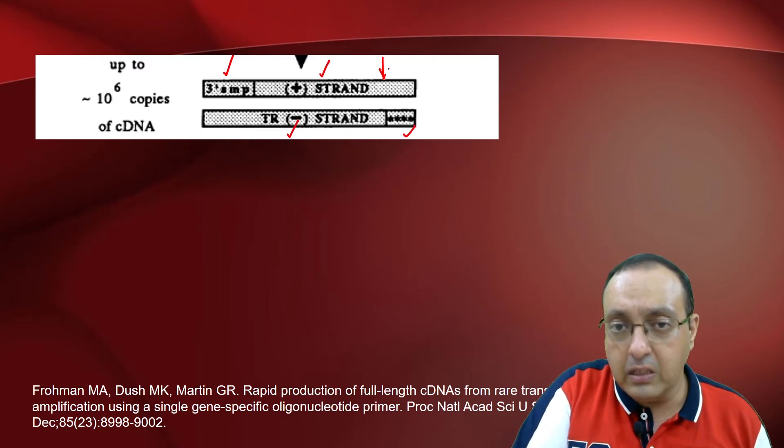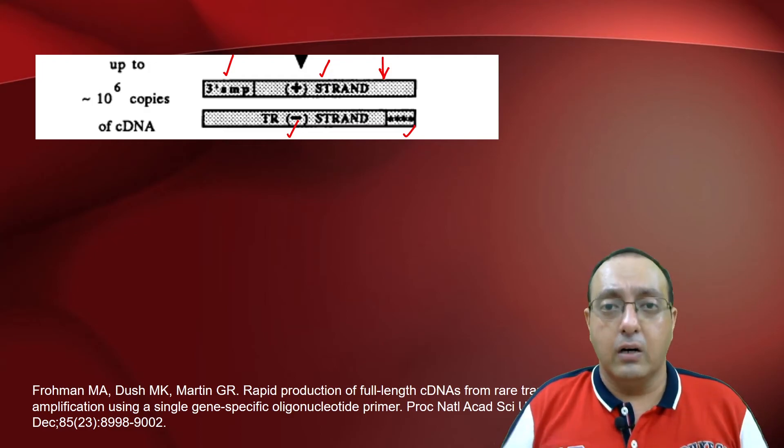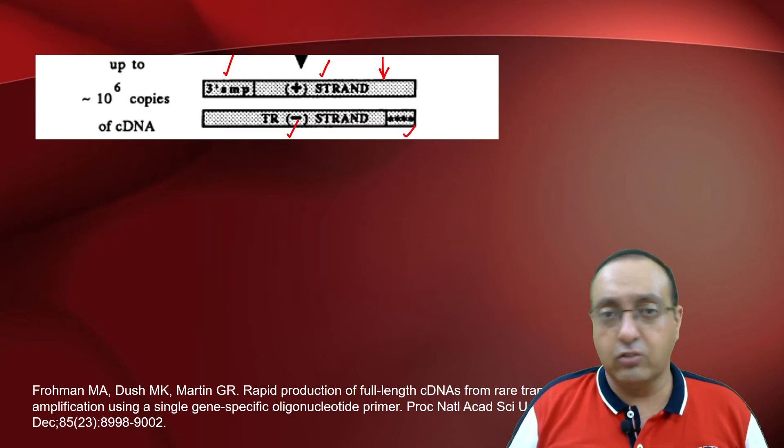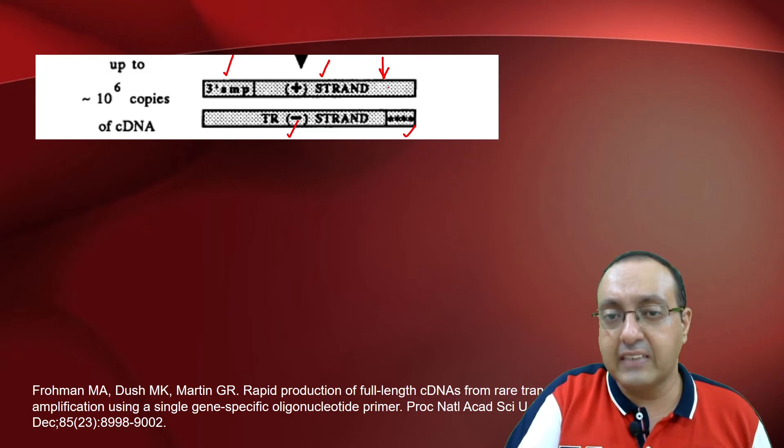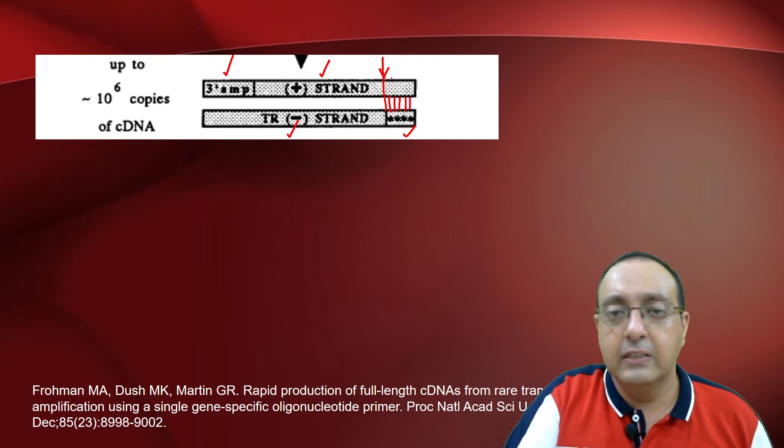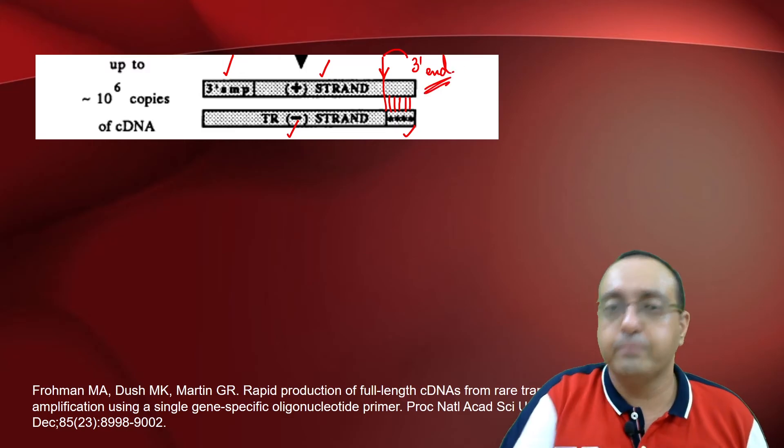And here will be directly your transcriptional end site 3' end, because you can exactly match it because this restriction enzyme will be just synthesized in a complementary fashion. So this is your 3' end of the RNA.